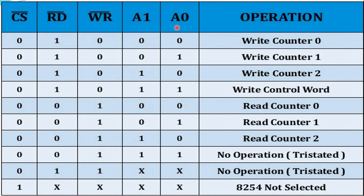A0 and A1 are used for counter selection. For 00, counter 0 is selected; 01, counter 1 is selected; 10, counter 2 is selected; 11, control word is selected. With the write signal active low, the corresponding operations are: write counter 0, write counter 1, write counter 2, or write control register.